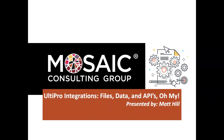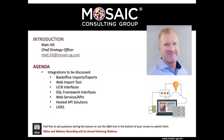Matt Hill, our Chief Strategy Officer at Mosaic Consulting Group, will host our discussion today. Some areas we're going to cover include integration types — back office imports and exports, web import tool, UCN interfaces, SQL framework interfaces, web services and APIs, hosted API solutions, and OODs. Within those, we'll talk about when to use and not to use certain integrations, pros and cons, best practices and pitfalls to avoid, as well as resource requirements.